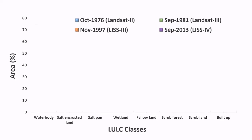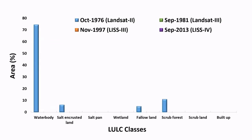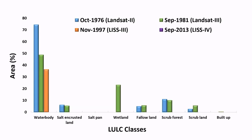As you can see, there is a significant reduction in the water body in contrast with the increase in saltpan around the periphery of the lake and wetland classes. Land use land cover, LULC, classes are categorized in various forms as per the Ramsar Convention.